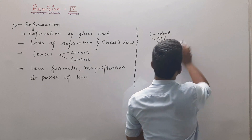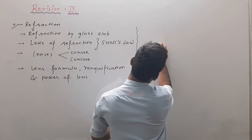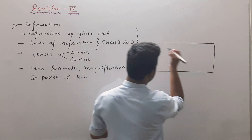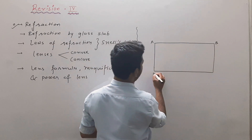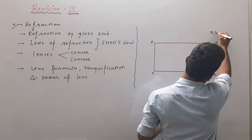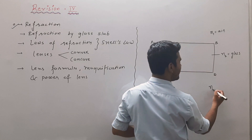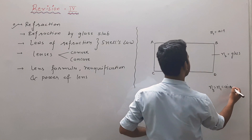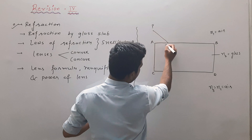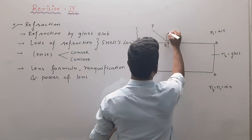The next topic is refraction due to a glass slab. Here we can assume a glass slab and label it A, B, C, D. This medium eta 1 is of air. This another medium eta 2 is of glass. And the third medium eta 3 is similar to eta 1, so that is also air. When light ray PQ is incident on surface AB making angle theta 1 —